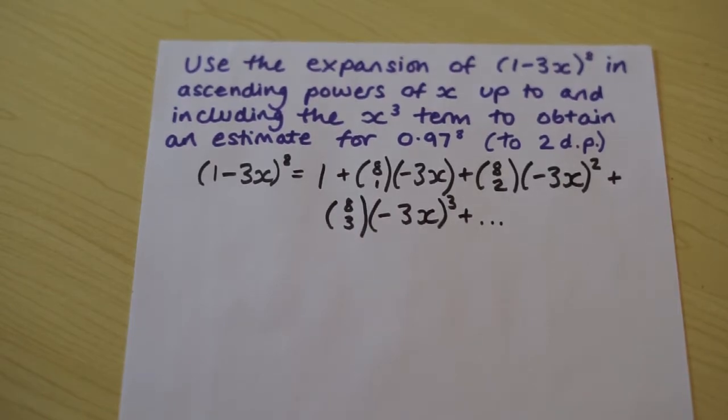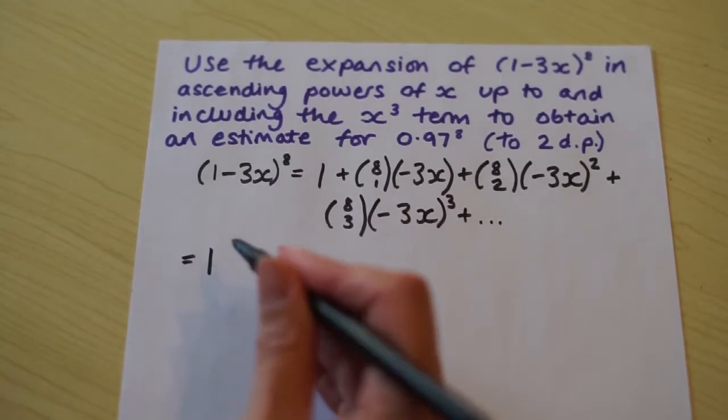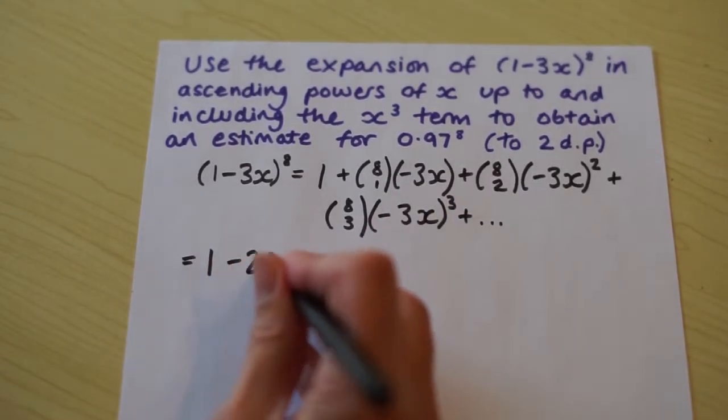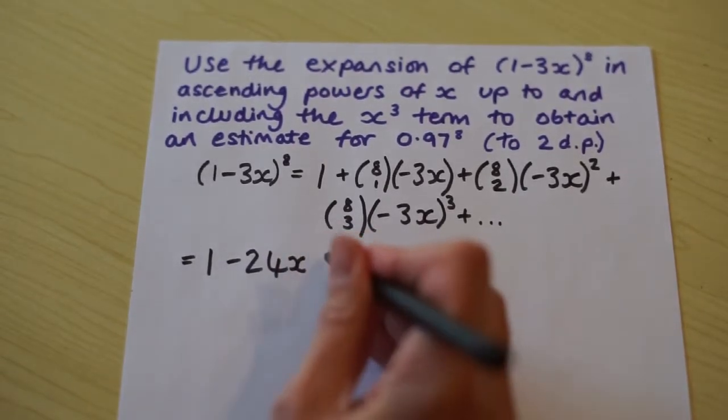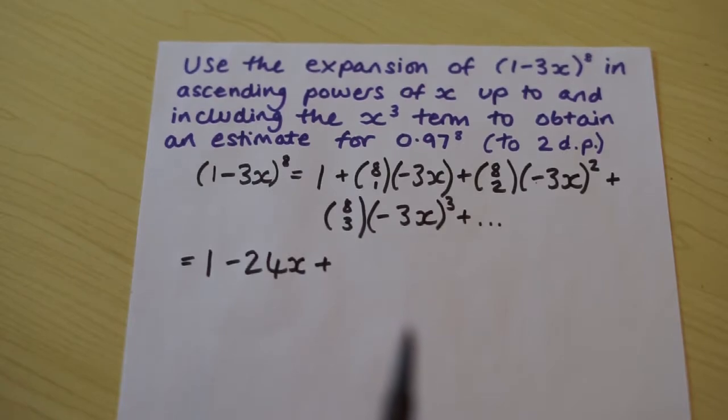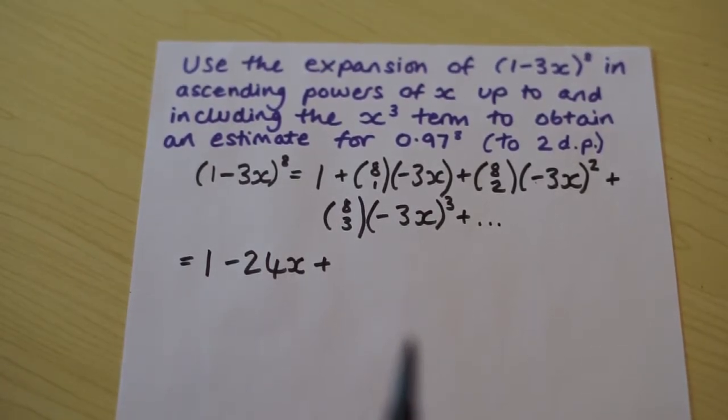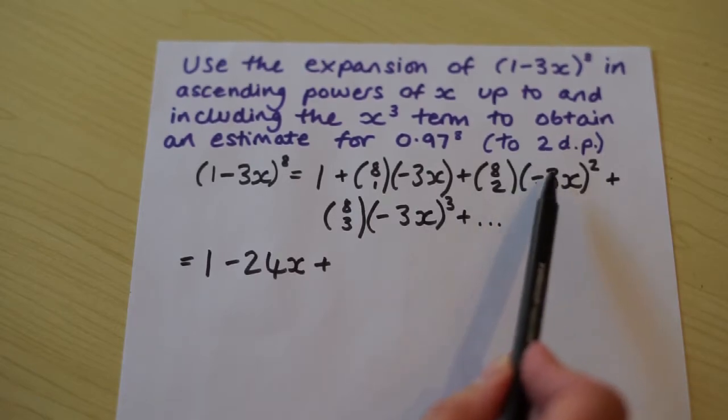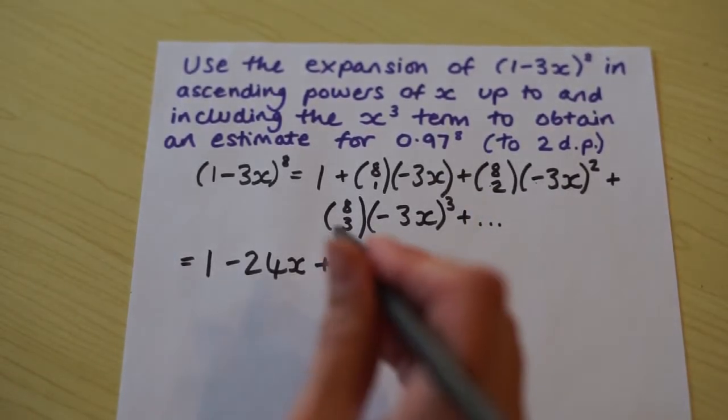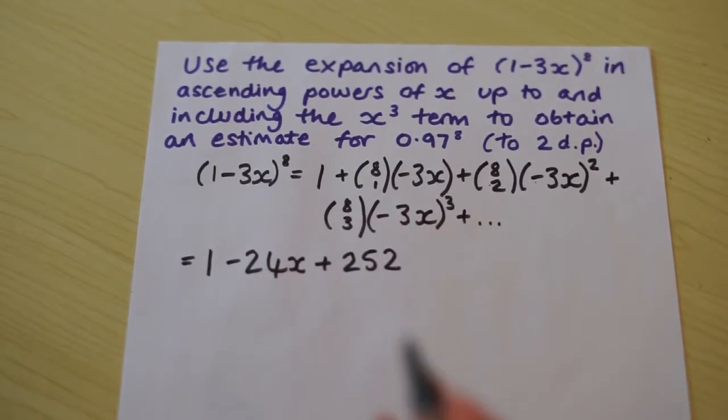Right, so let's simplify this. So the first term, 1 is 1. Okay, so 8 choose 1 is 8, multiplied by minus 3, minus 24x. Okay, next one. That minus is going to be a minus and a minus, so it's a plus. So 8 choose 2 is 28. Check that on your calculator. Minus 3 squared is 9. So we're definitely remembering to square the coefficient in front of the x as well as the x. So the actual coefficient of this term is going to be 28 multiplied by 9, which is 252 x squared.